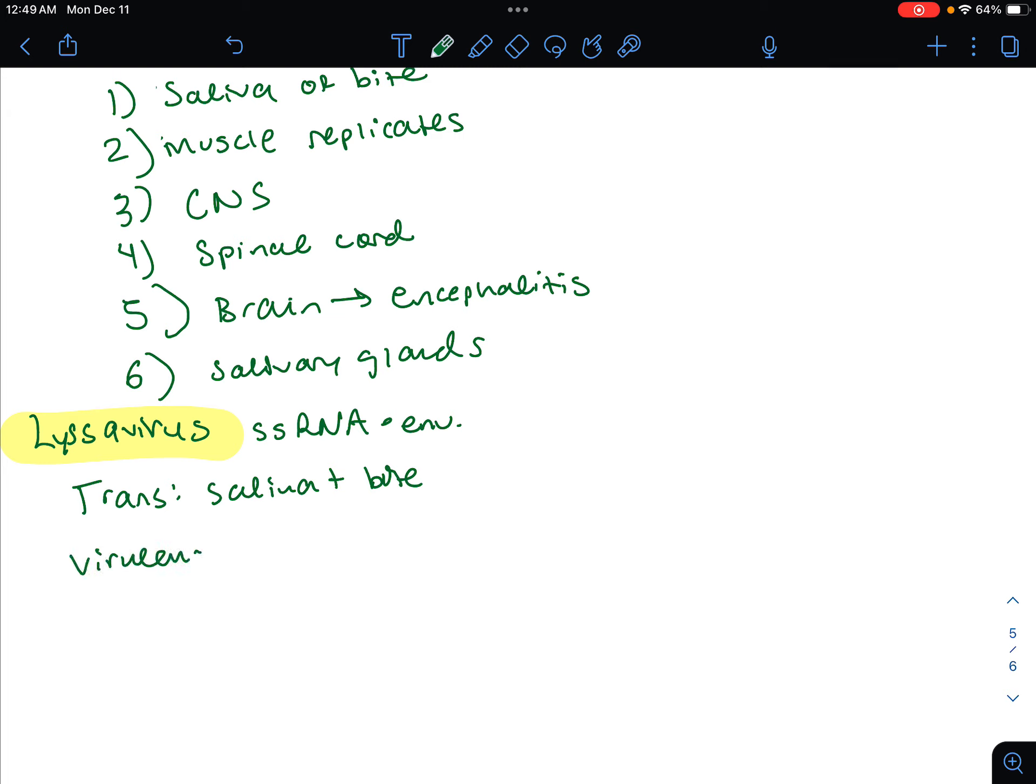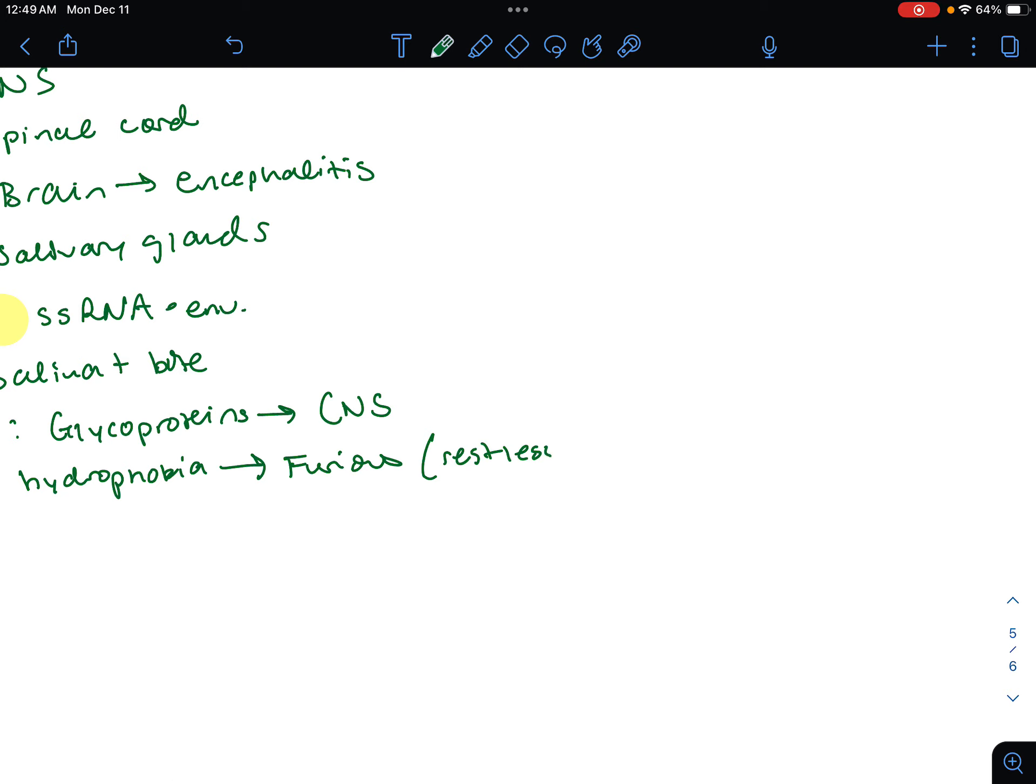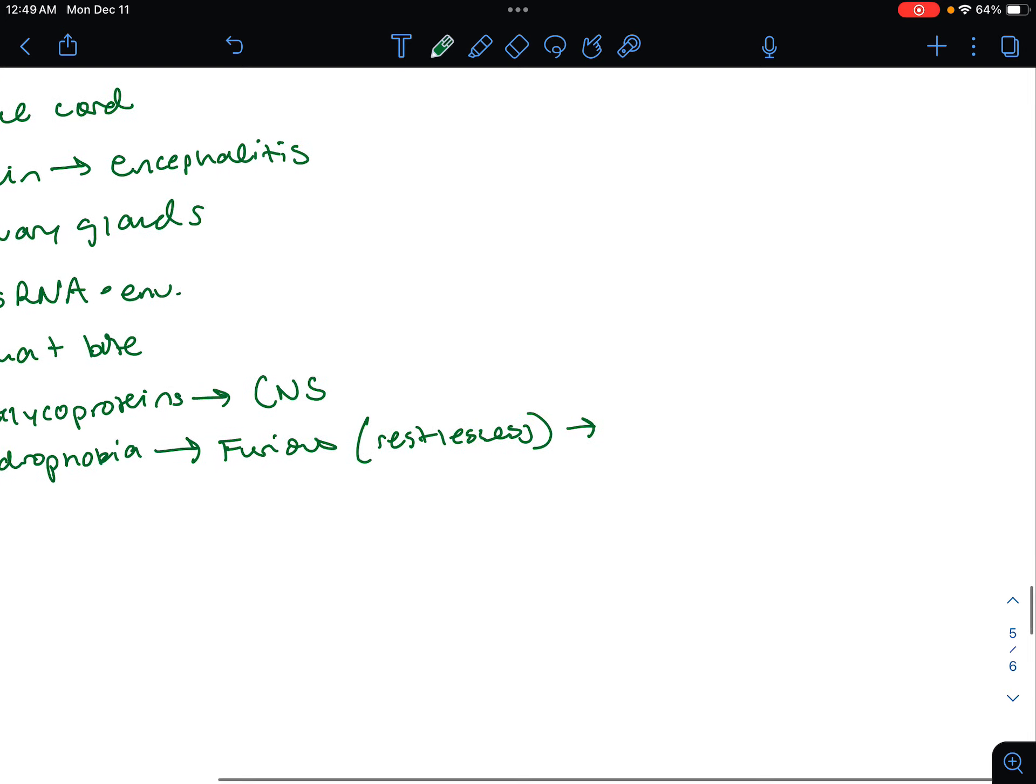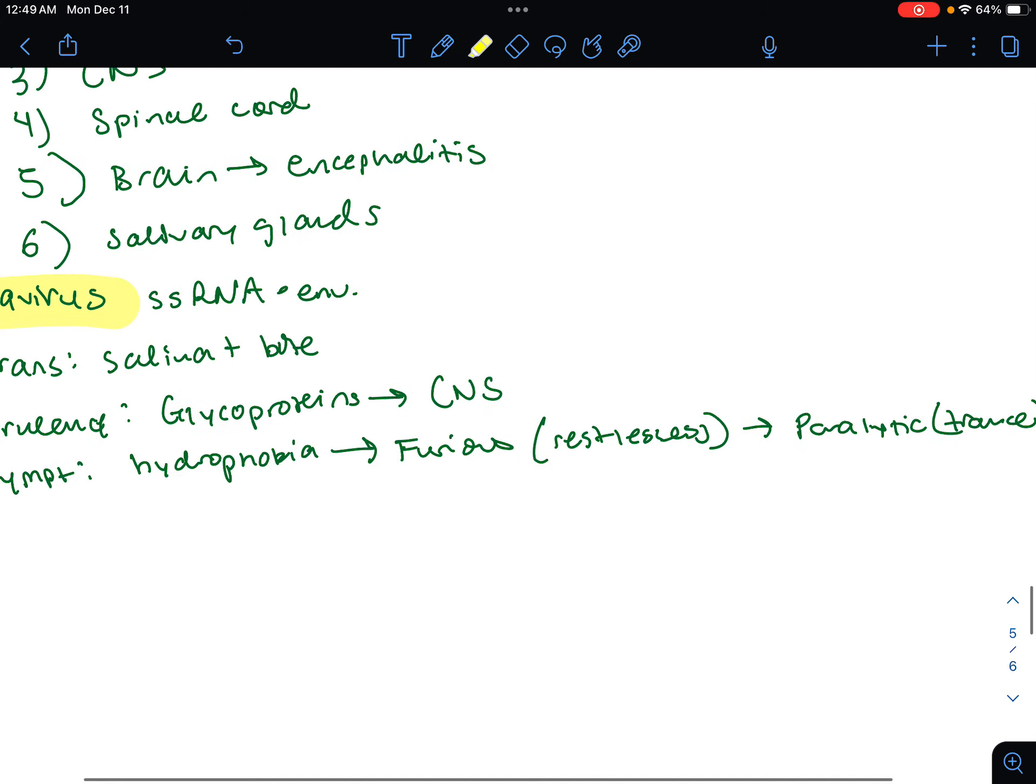Virulence: we're going to have glycoproteins on the envelope, and these are going to let it get to the central nervous system. The symptoms: we're going to have initially hydrophobia. Hydrophobia is going to go into furious, restlessness. Then we're going to have this period known as the paralytic rabies. That's going to be a trance-like state when the animal is paralyzed due to rabies.